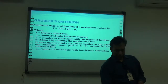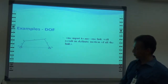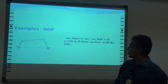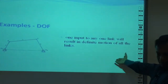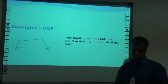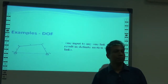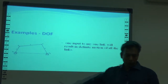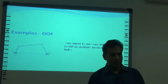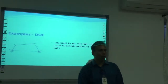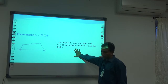For the four-bar mechanism shown, O2 and O4 form the fixed link, and 2, 3, and 4 are the other three links. Applying Grübler's criterion: 3 × (4 − 1) − 2 × 4 = 9 − 8 = 1. So the four-bar mechanism has one degree of freedom, meaning one input to any one link will result in a definite motion of all other links.